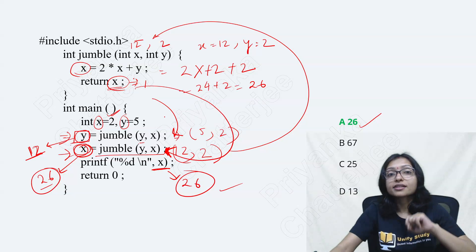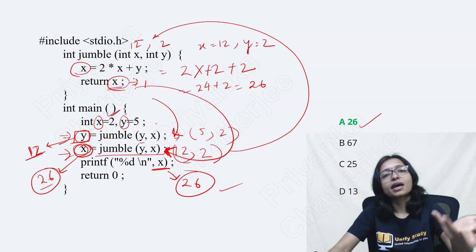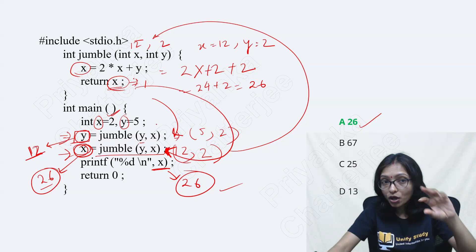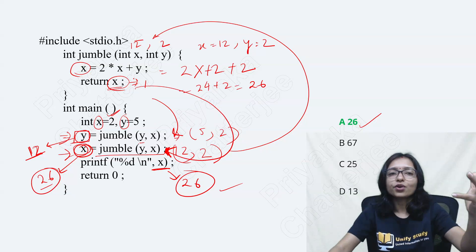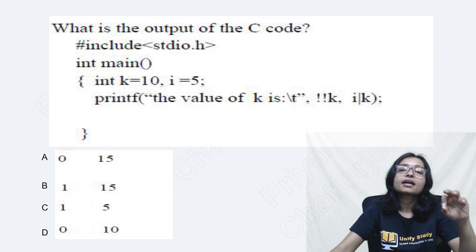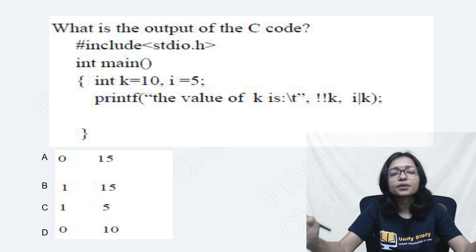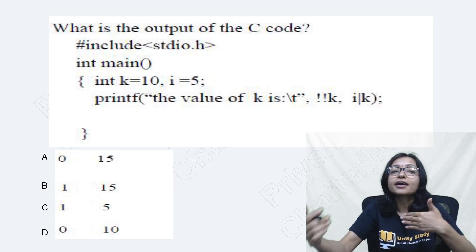Looking simple but maximum time you are getting confused. Because how it is happening? You are not able to understand. Here, it is one different type of question. That is how you have to understand bitwise operation. This type of question is also very simple but gets creating confusion.